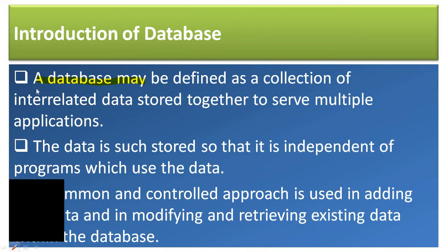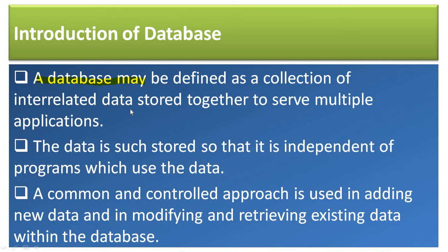So what is a database? A database may be defined as a collection of interrelated data stored together to serve multiple applications. A database contains rows and columns; a table contains information, data, and fields. This means that the data is interrelated — one type of data is a collection of related data which helps multiple applications.